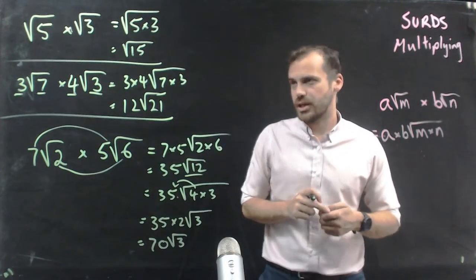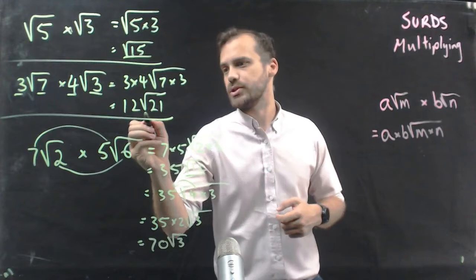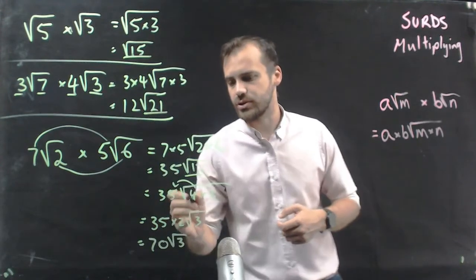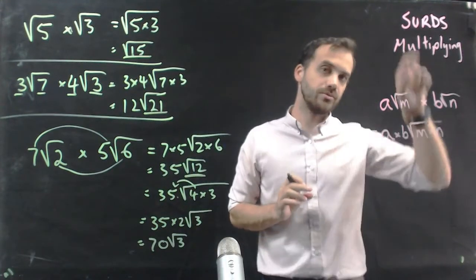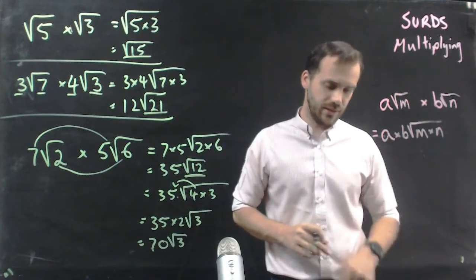So, you've got to be extra careful that every time you do one of these questions, you check under the root sign and ask yourself, can that be simplified? You're not multiplying surds unless you're also simplifying at the end.